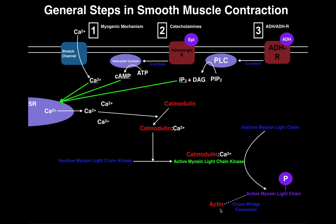Let's do a quick recap. We can activate smooth muscle to contract through one of three mechanisms: the myogenic mechanism, which involves stretch of the blood vessel and acts as a negative feedback system to restore baseline diameter through calcium influx; catecholamines; and antidiuretic hormone — which ultimately lead to the second messengers IP3 and cyclic AMP.